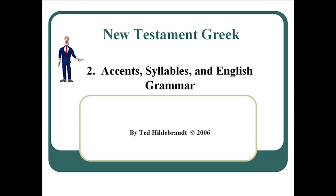Today we want to focus on the accents. There will be three of them with six rules. The syllables will have four rules for how you split up a word into syllables. And then we'll be introducing some others, like the enclitics and proclitics, and of course you've got to learn how to do punctuation in Greek. Before we jump into Chapter 3, where we actually start the present active indicative verb, we want to go back and do a quick review of English grammar that will set us up for the grammatical structures we'll be using in the rest of the course.